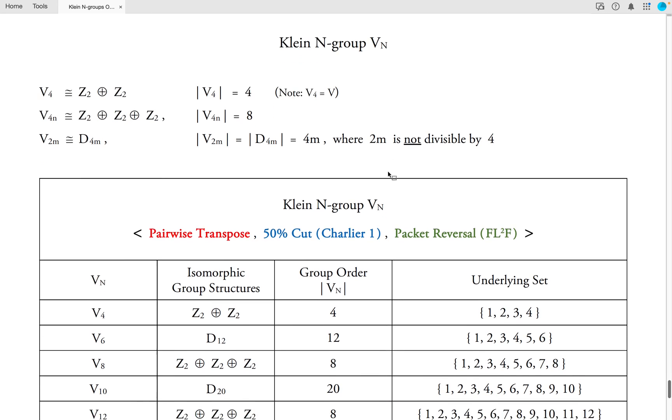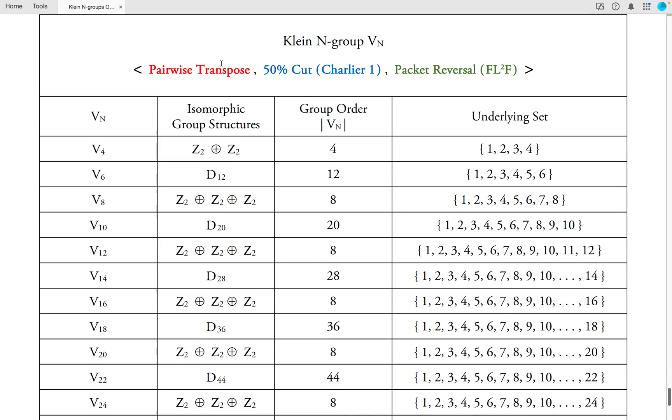This gives rise to the following table. As always, there are three generating elements for the Klein N group, where it's important to note that the Klein N group is only defined for even values of N. And here I give the isomorphic group structures for each, the order of the group, and the underlying set on which the pairwise transpose, the 50% cut, and the packet reversal are based.